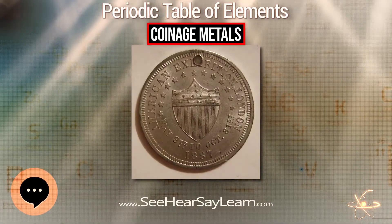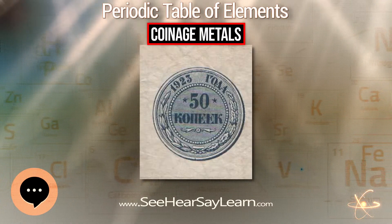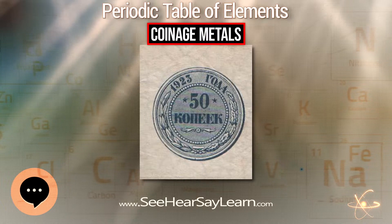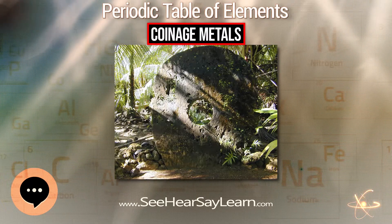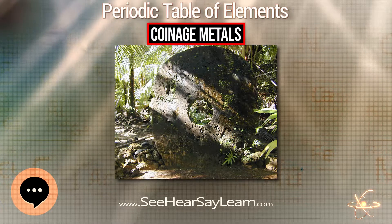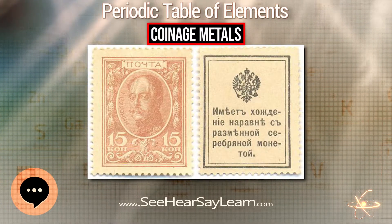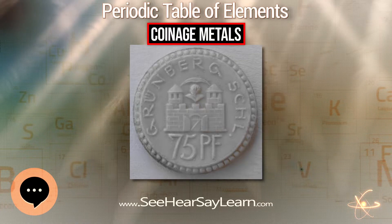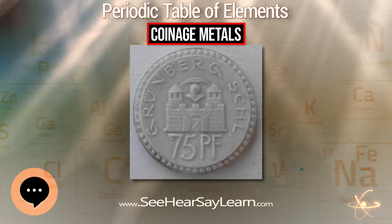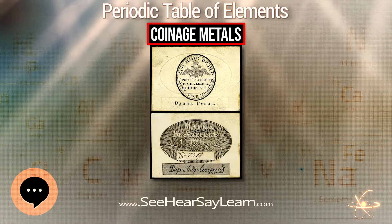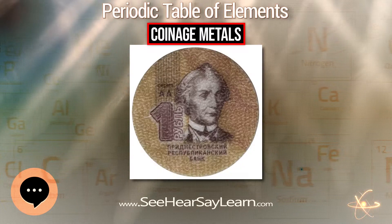Coinage metals comprise at a minimum those metallic chemical elements which have historically been used as components in alloys used to mint coins. The term is not perfectly defined, however, since a number of metals have been used to make demonstration coins which have never been used to make monetized coins for any nation-state, but could be. Some of these elements would make excellent coins in theory, but their status as coin metals is not clear.